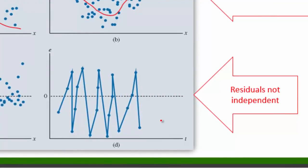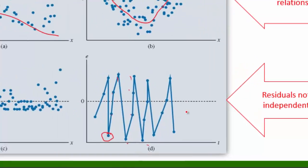In the fourth panel, the residuals follow some sort of seasonal pattern, so they are not independent from one another. For example, residuals tend to increase three times and then decrease, and so on. This is typical in time series data with seasonality, like quarterly data.